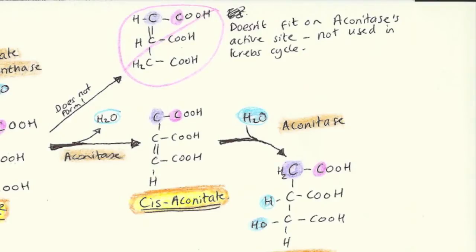Citrate then gets converted into cis-aconitate with the help of the enzyme aconitase. This is done by dehydration. The dehydration is very stereospecific. As you can see from the diagram, only the bottom isomer is formed. The top isomer doesn't fit onto aconitase's active site, so it is not used in the Krebs cycle.